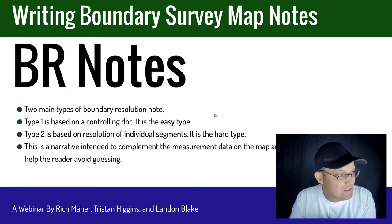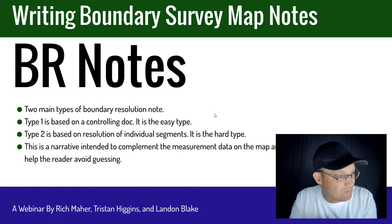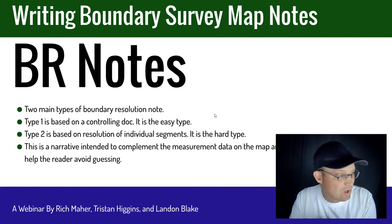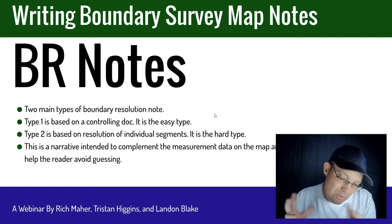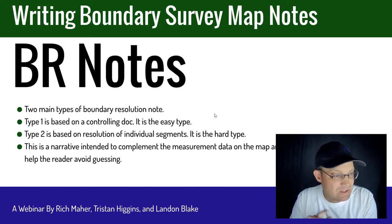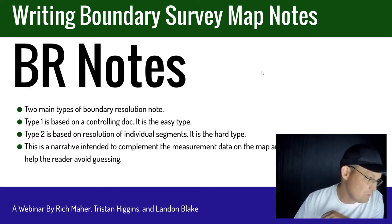The bad news for my team is we don't frequently get paid to do the easy stuff. Oftentimes we are surveying deeded land that is not on a controlling subdivision map and does not have a nice modern metes and bounds land description. So my folks have to learn to do the hard type 2. That's most typically our note — maybe one out of four or one out of five might be a type 1 note. This is a narrative to complement the measurement data on the map and help the reader avoid having to guess about how the resolution was put together.